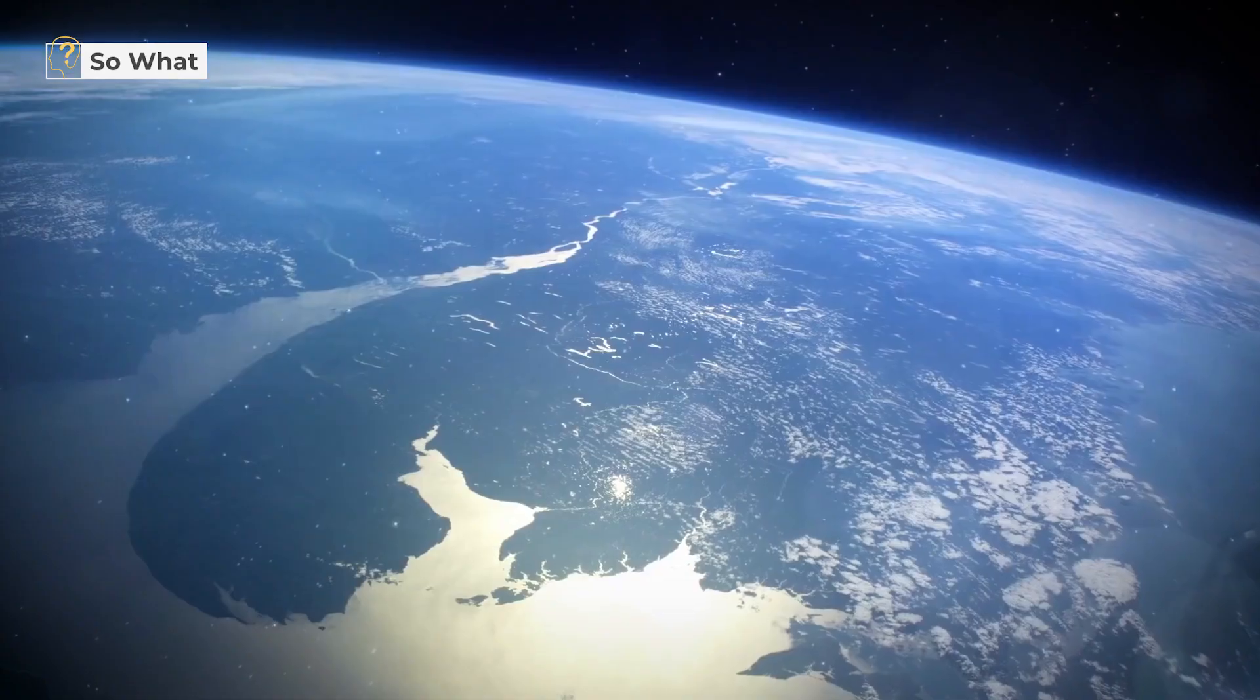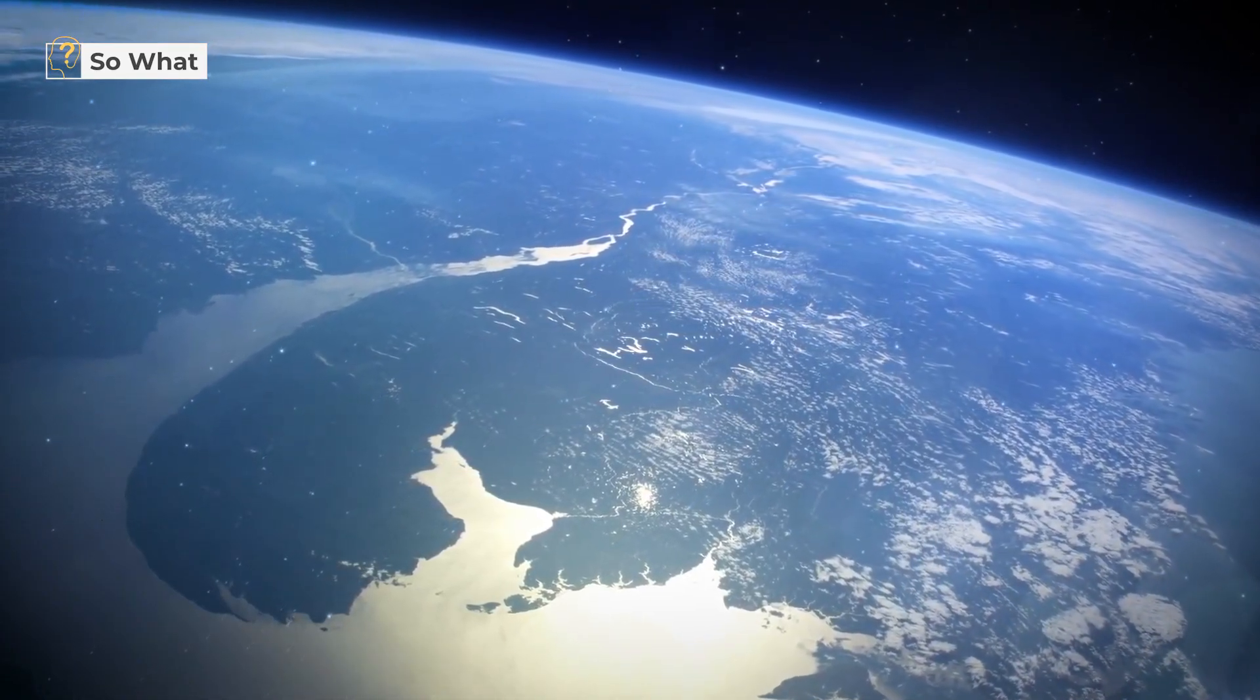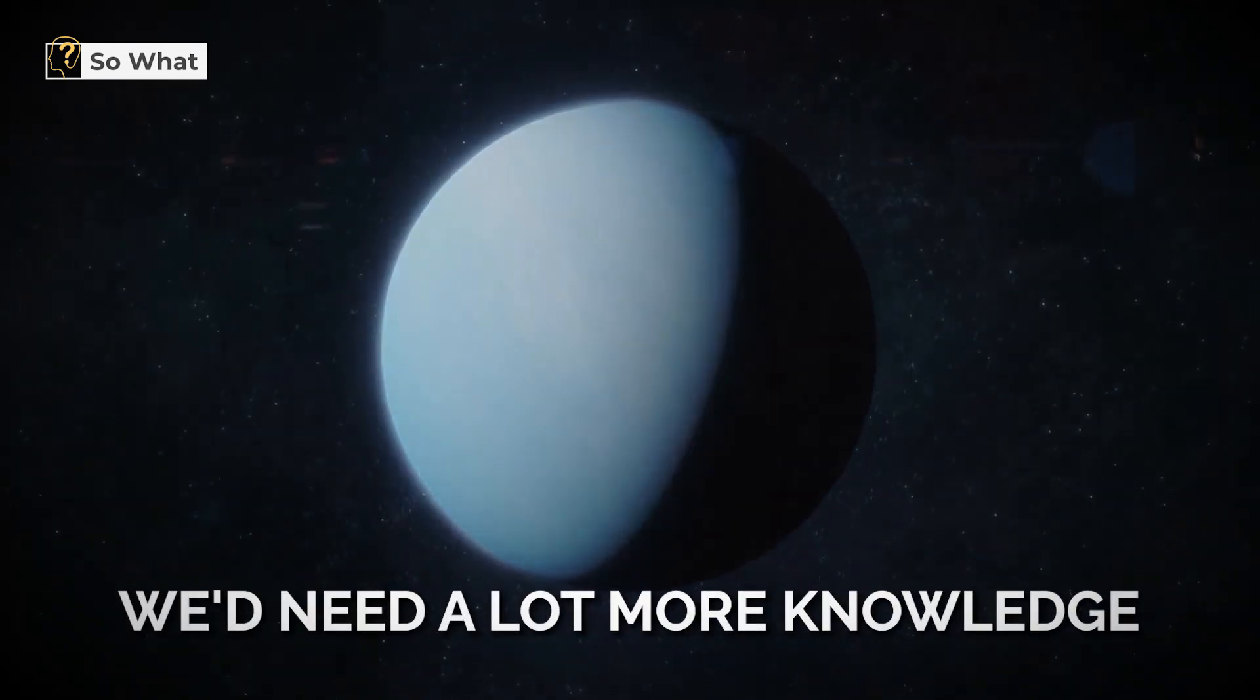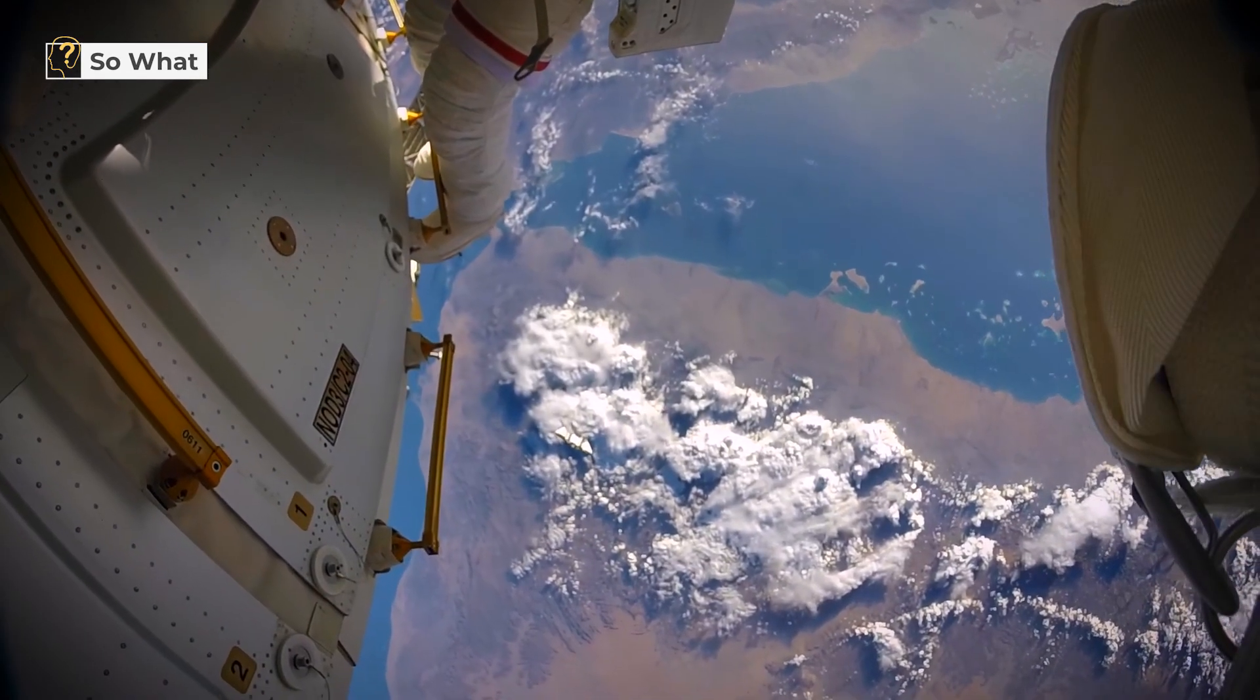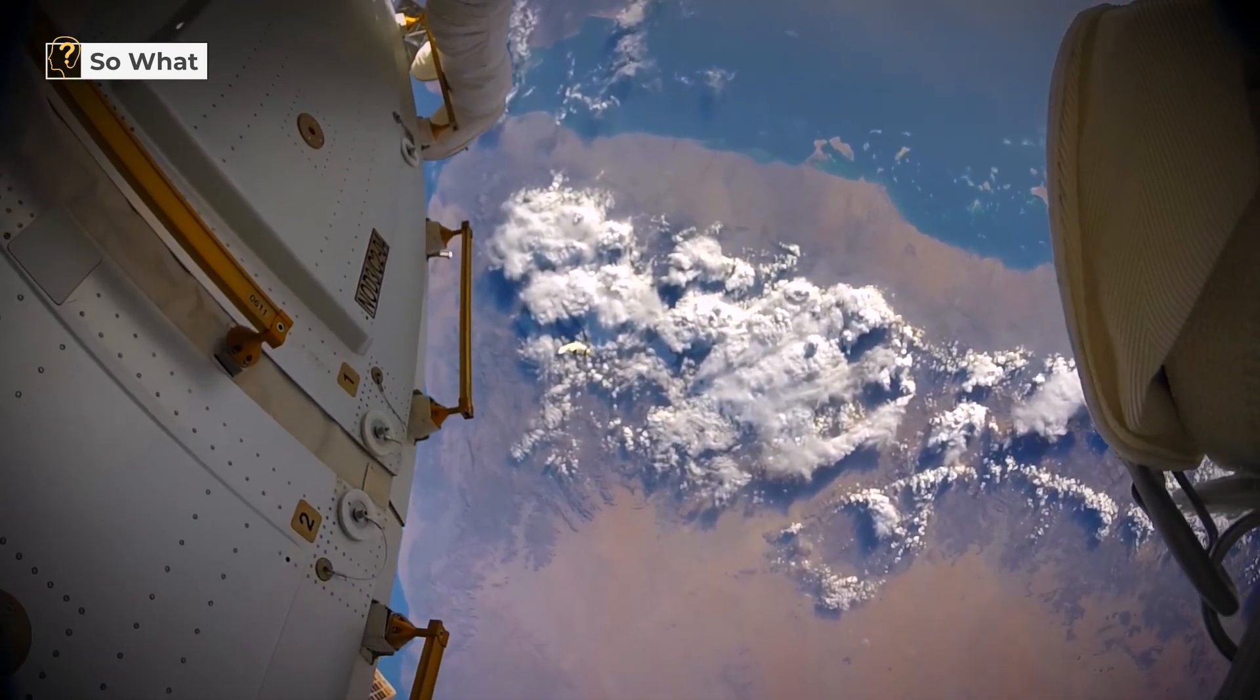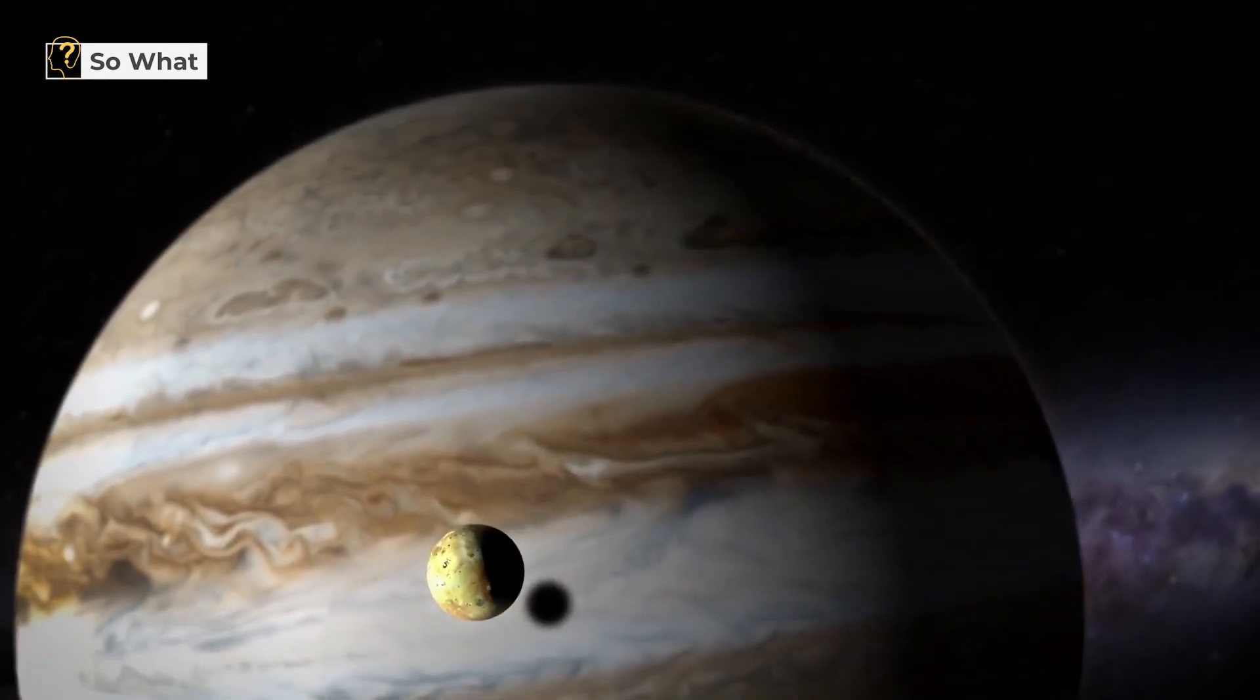We couldn't possibly exist atop a gas giant. Before sending humans to any conceivable Earth 2.0, we'd need a lot more knowledge. NASA is now working on a small probe that will travel at one-fifth the speed of light. It has the potential to dramatically increase our understanding of exoplanets.